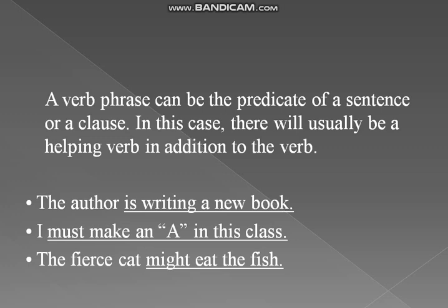A verb phrase can be the predicate of a sentence or a clause — in this case there will usually be a helping verb in addition to the main verb. For example: The author is writing a new book. Here the author is the subject, and the rest of the sentence — is writing a new book — is the verb phrase, which is also the predicate of the sentence.